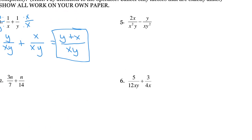On to number five. We have 2x over x squared y minus y over x y squared. This one gets a little bit more complicated. First, we need to think about what we have in our denominator — I'm going to list underneath my fraction what's in my denominator. The left side has an x, an x, and a y. The right side has an x, a y, and a y. So the left side has two x's and one y, and the right side has one x and two y's. If I'm going to give the left side something that the right side has but the left side is missing, it would be a y. And for the right side, it's going to be an x. So we give the right side an x and the left side a y.